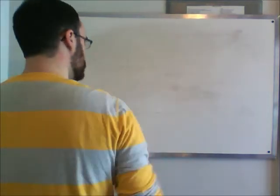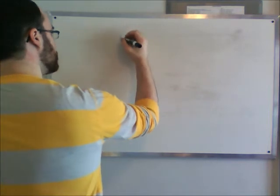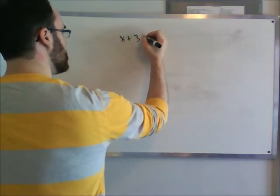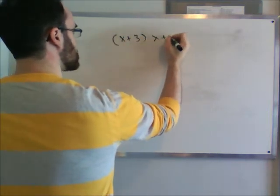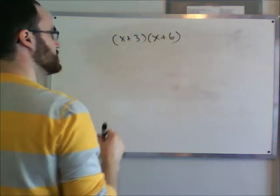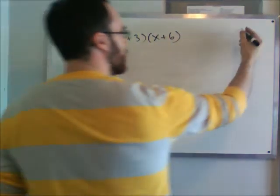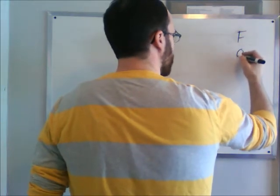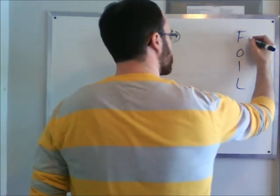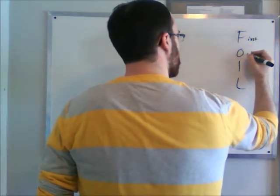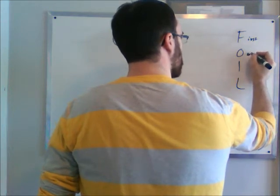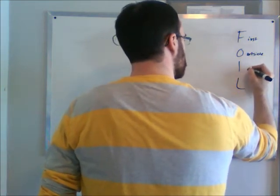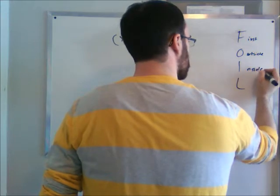When you work with two binomials side by side, let's say x plus 3 and x plus 6, we do a thing called FOIL. F-O-I-L, which is the first, outside, inside, and last.